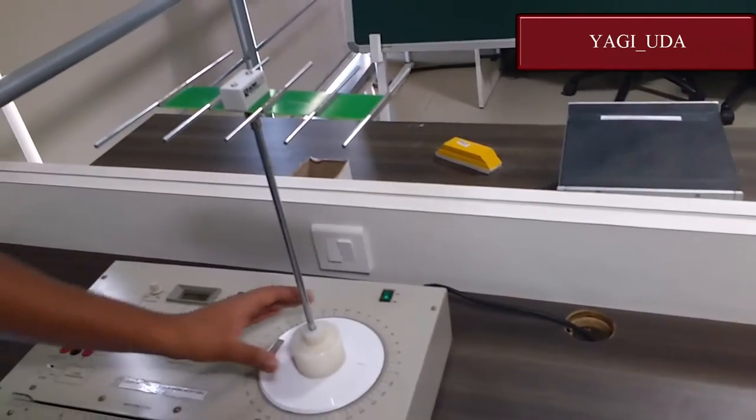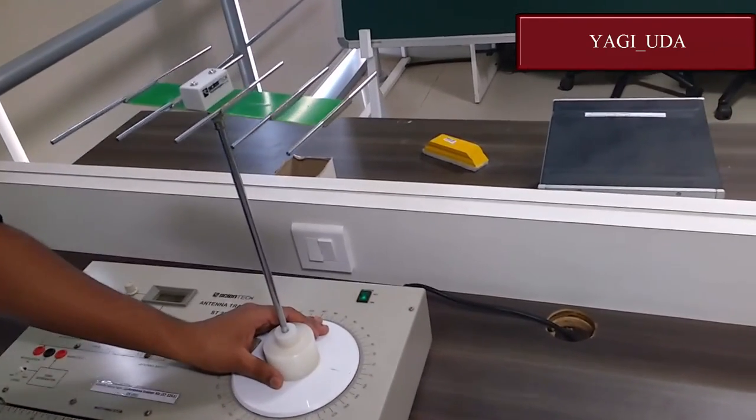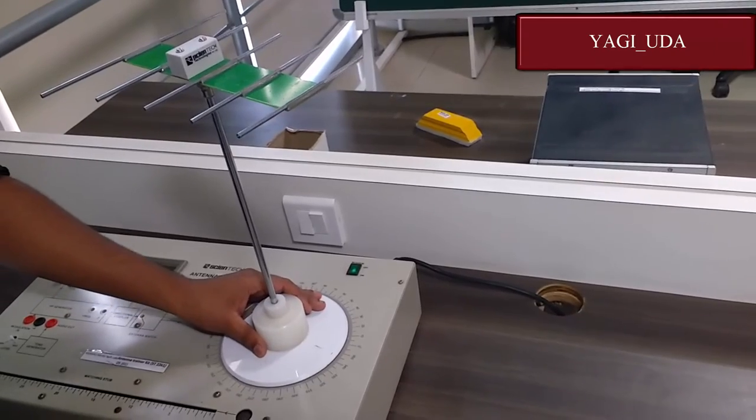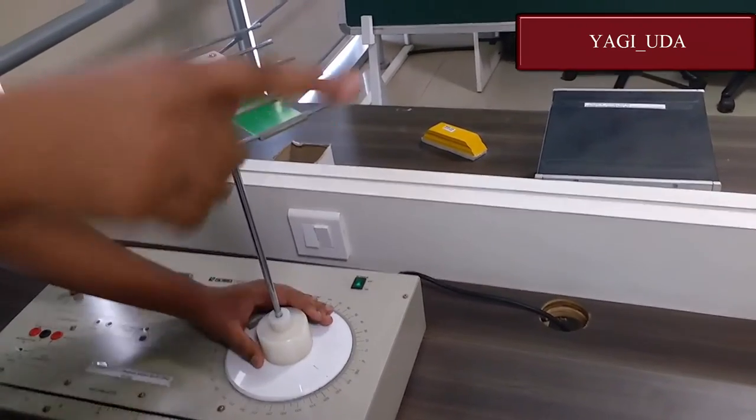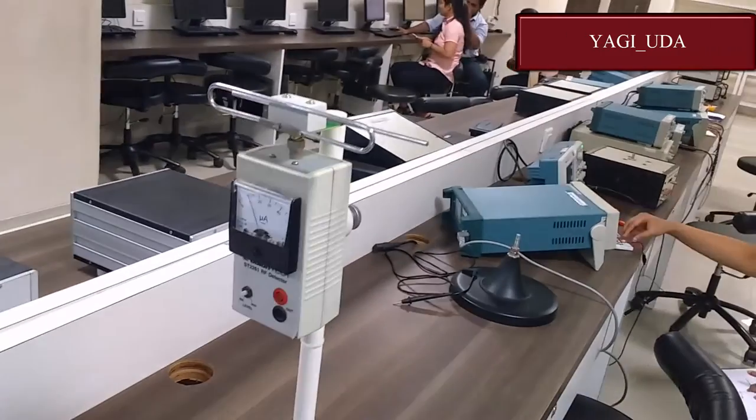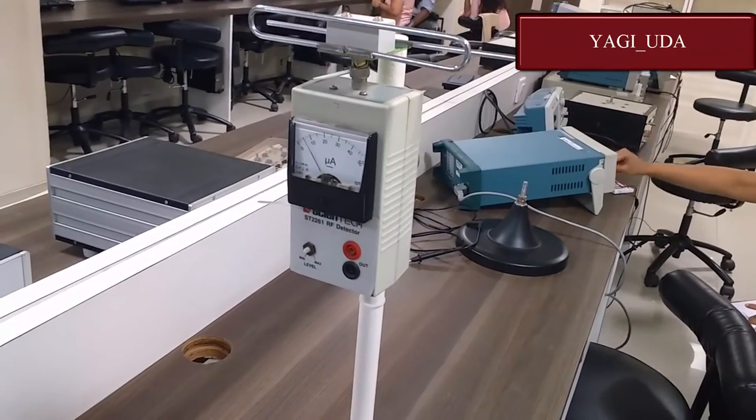In order to note down the readings, we'll rotate the antenna by 30 degrees. As we can see on the milliammeter, the reading is getting reduced.